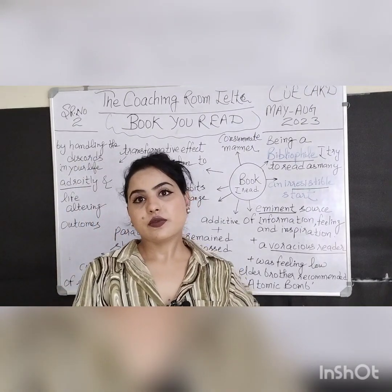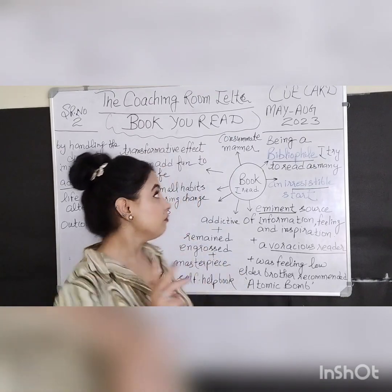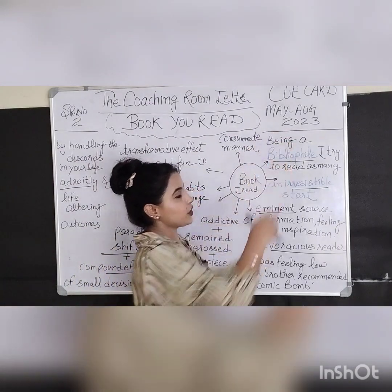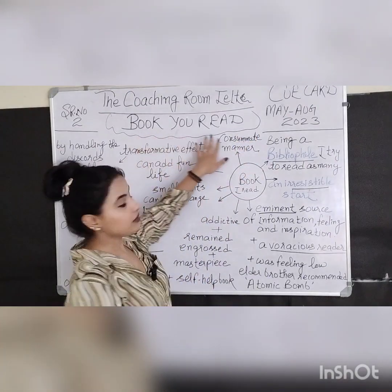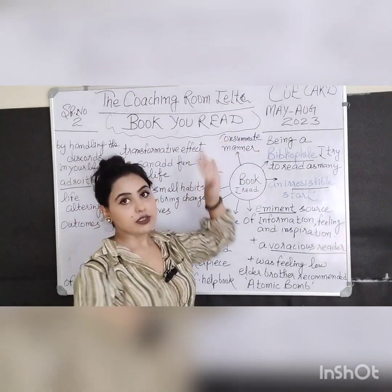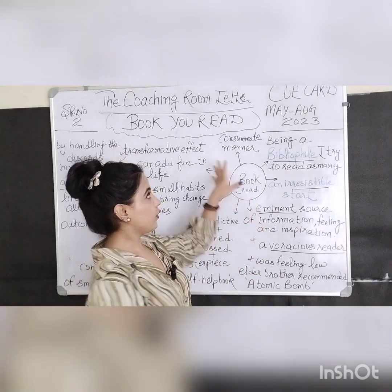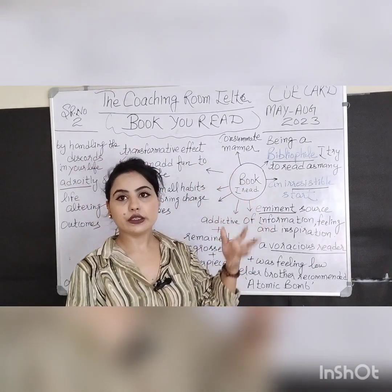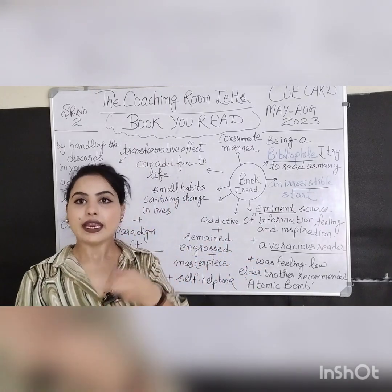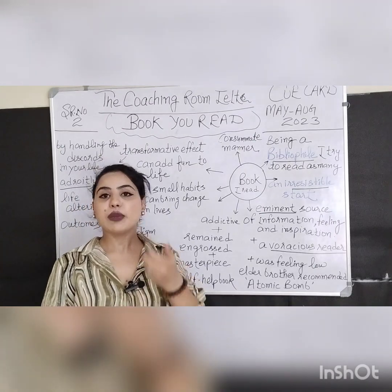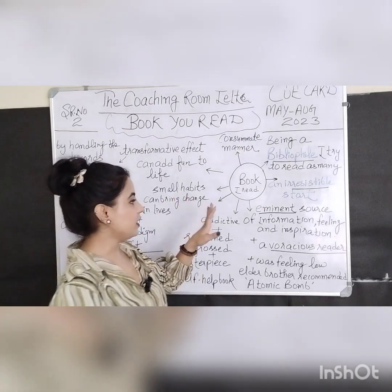Hello guys. In this video we are going to discuss Q-Card No. 2 from the May to August 2023 list. The cue card topic is 'a book that you have read.' That means you have to talk in the past tense and explain which book you read, who wrote it, what kind of content you found in that book, and why you liked it. All these points we are going to cover.